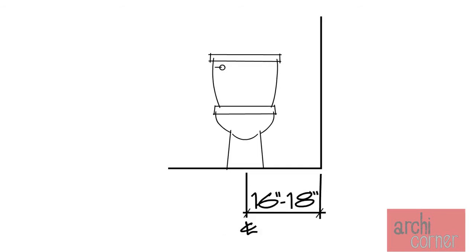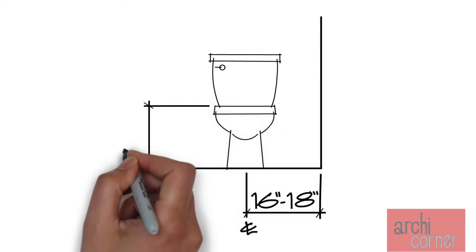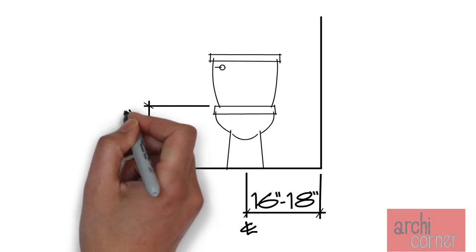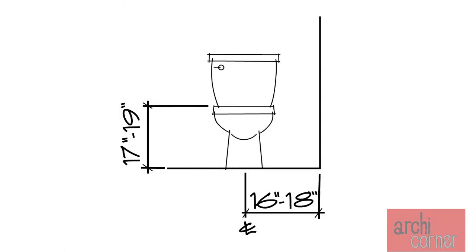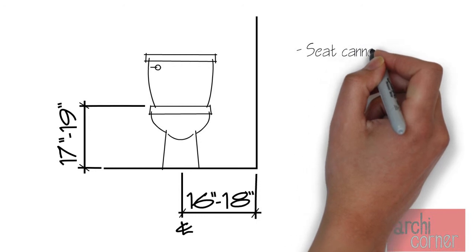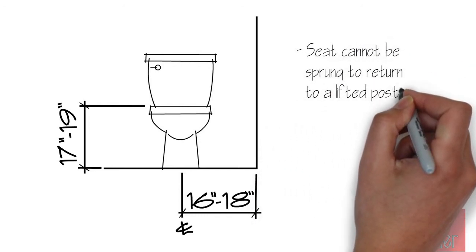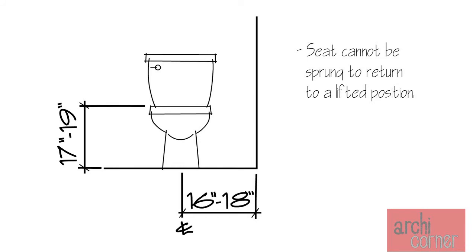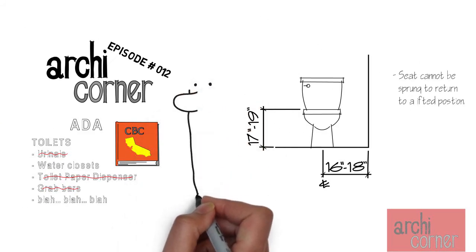Typically a toilet also has a seat that is mounted to the top of it. With that in mind, the seat height of the water closet above the finished floor has to be 17 inches minimum and 19 inches maximum, measured to the top of the seat. Also, the seat cannot be sprung or have some type of mechanism that has to return to a lifted position. And that's really all the requirements for the water closet itself.